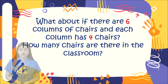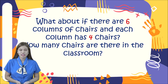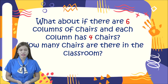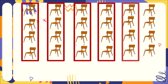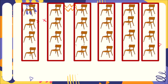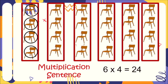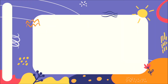What about if there are six columns of chairs and each column has four chairs? How many chairs are there in the classroom? Let us count the columns: one, two, three, four, five, and six — six columns. How many chairs in each column? One, two, three, and four. So our mathematical sentence is: six times four is equal to 24. This means four times six equals 24 and six times four equals 24 are the same. So we can say four times six is equal to six times four — this is the commutative property.